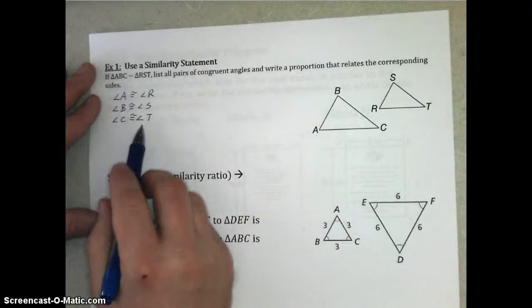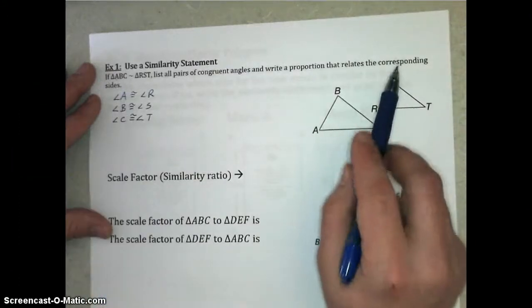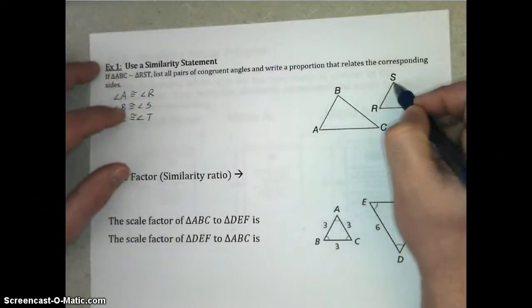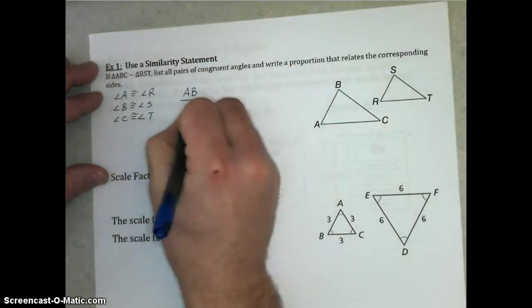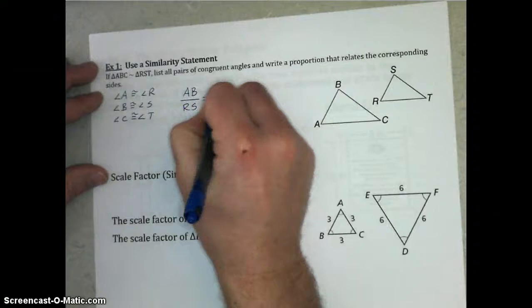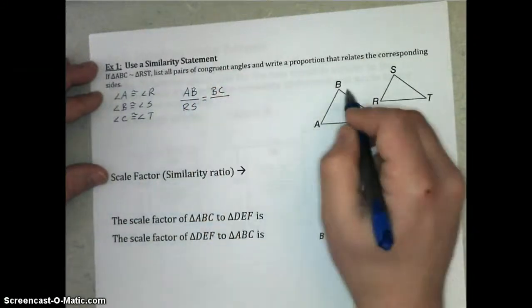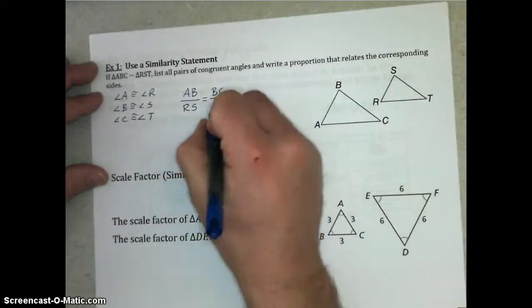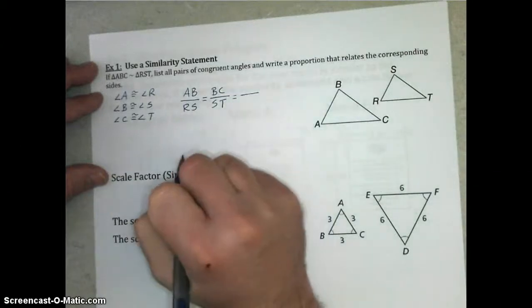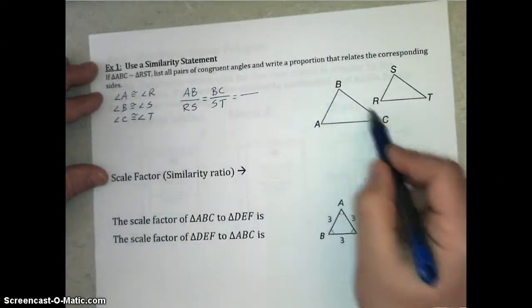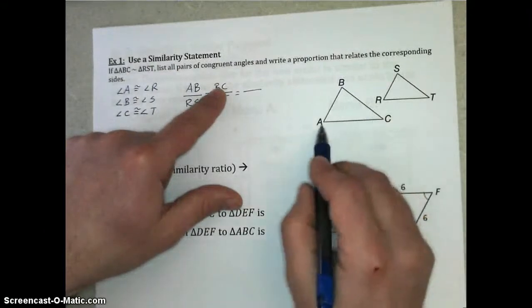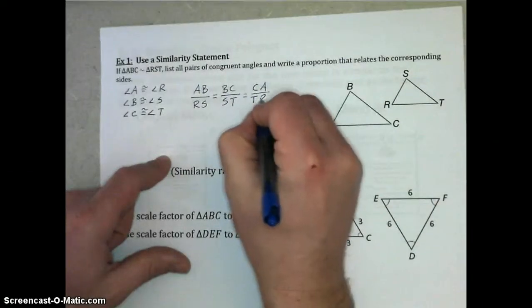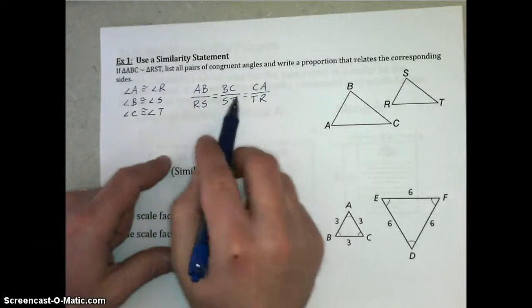And we want to write a proportion that relates to corresponding sides. And so we should notice that AB, since A is congruent to R and B is congruent to S, then segment AB should be compared to segment RS. And that ratio would be the same as segment BC. Notice that I'm using the letters from this bigger triangle all on top of these ratios. BC would then relate to ST, making sure I get the order the same. And then if I've said sides AB and sides BC on the tops of these, then I should say side AC, or side CA. I don't care how you write that as long as we keep that order the same in both triangles. And there are the proportions that make those sides proportional.